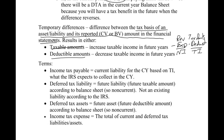Our key terms: income tax payable equals taxable income times the tax rate — I typically calculate that first. Step one: determine income tax payable. Step two: determine the amounts of the deferred tax liability and deferred tax asset — we could have both in a problem. Step three: compute the total of the current and deferred, which is essentially the net of steps one and two. This plug number feeds into our journal entry. Next, we'll start putting numbers to these concepts and defining temporary differences in more detail.